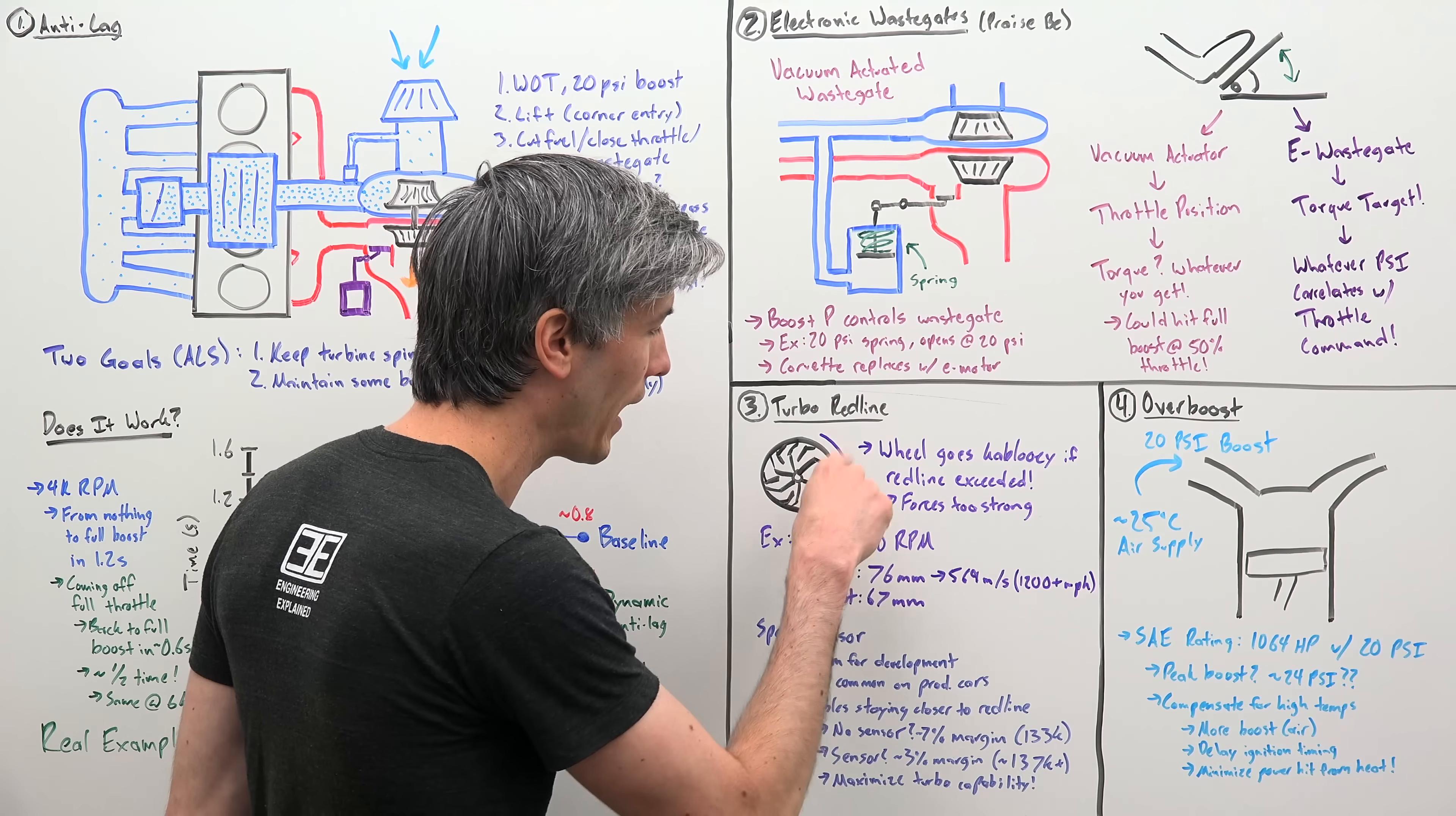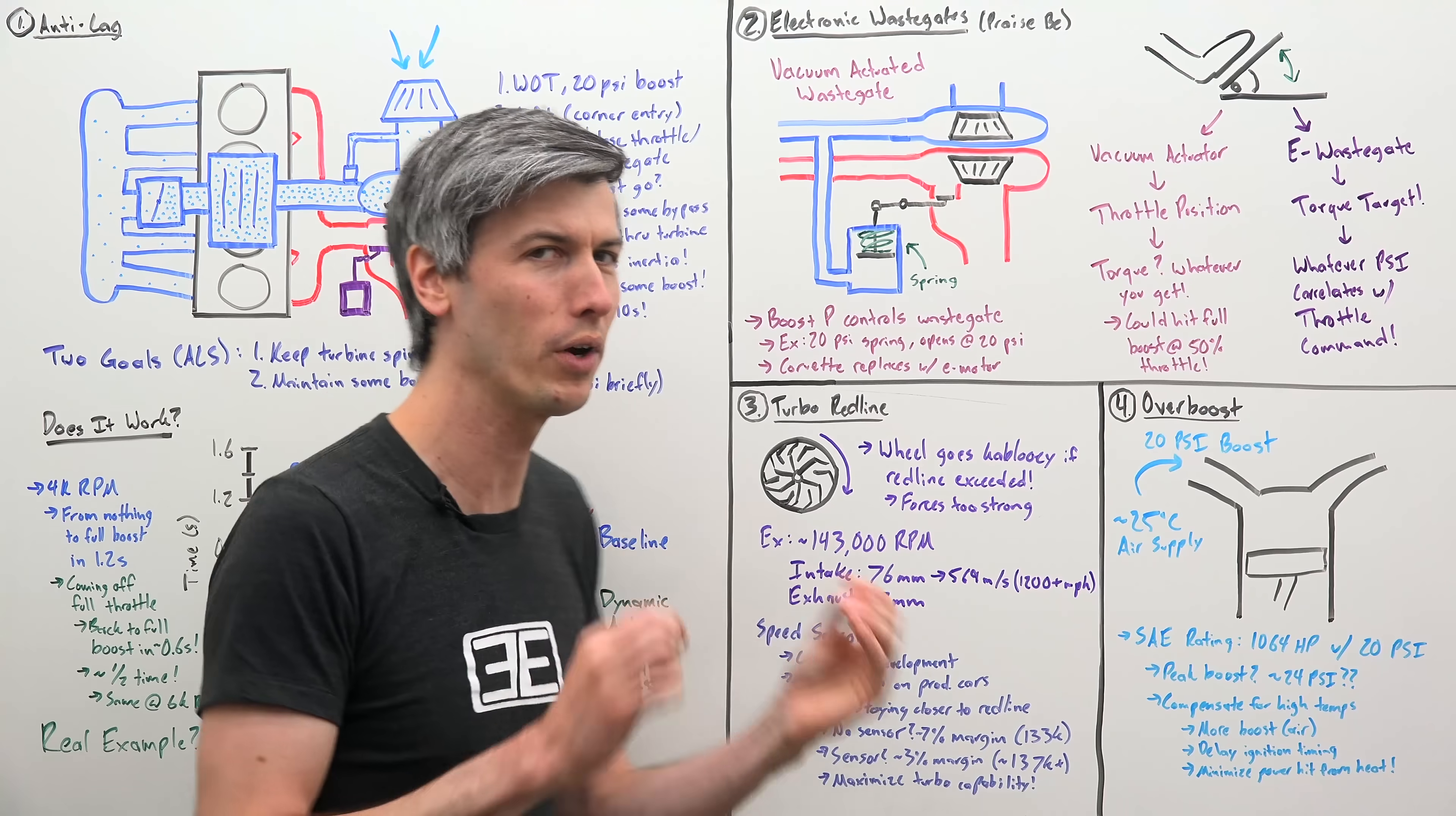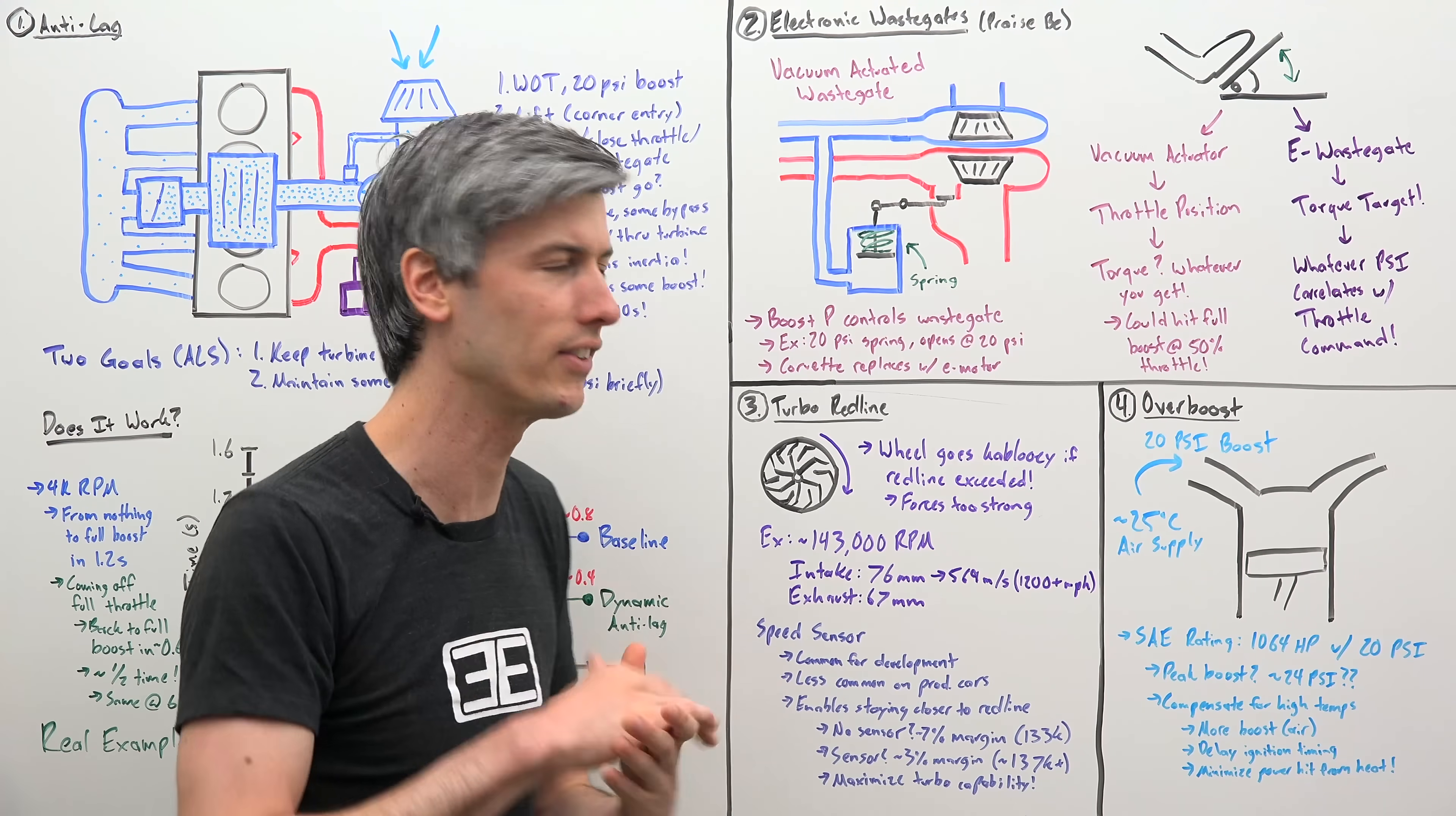So the outer edge of that wheel is spinning at 569 meters per second, over 1,200 miles per hour. Absolutely ridiculous. Now one of the ways that you ensure that you never cross red line in development is you will put speed sensors on these turbochargers, see what speed they get to, and ensure that you map your engine to make sure it never gets near that red line.